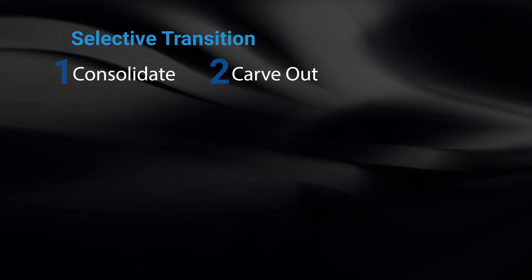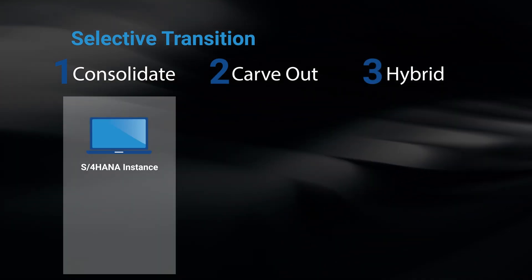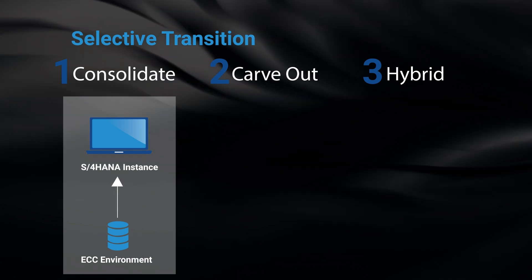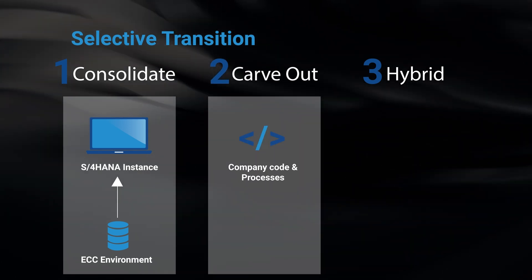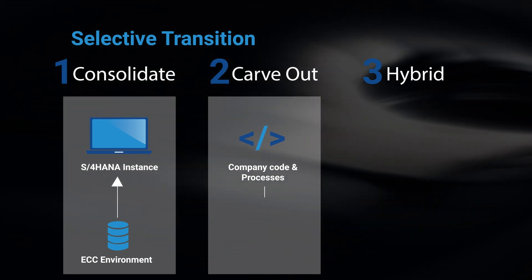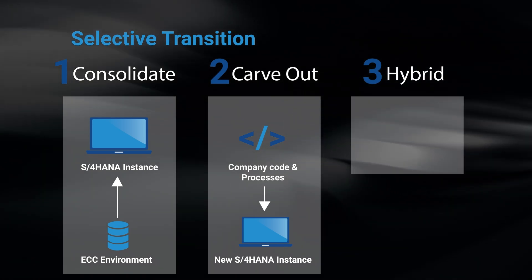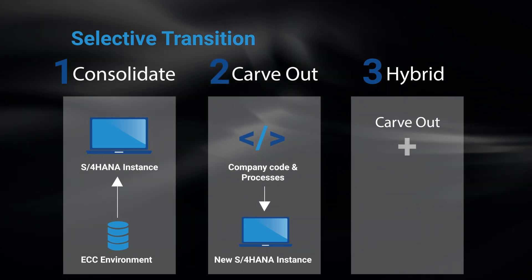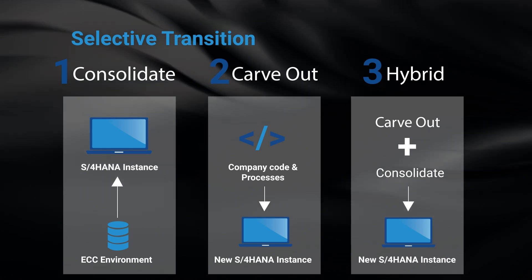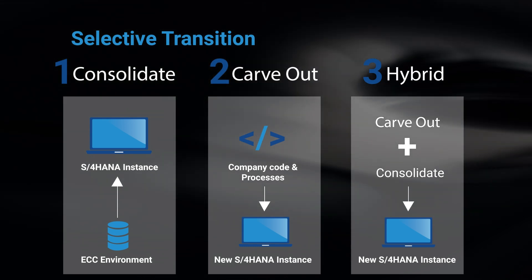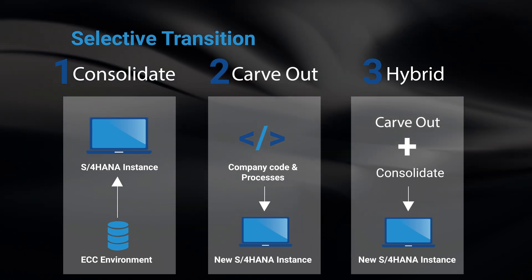Selective transition has three different approaches: consolidate, carve out, and hybrid. Consolidate is where you have a target S4 HANA instance already and you want to add functionality to it from another ECC or S4 environment. Carve out is where you want to extract and migrate certain portions of an existing landscape — such as a company code or a certain set of processes — and stand up a new S4 HANA instance. These two capabilities provide a third option, hybrid, which combines elements of both carve out and consolidate, resulting in a new S4 HANA landscape that integrates selectively migrated processes from one or more legacy solutions and any new processes within S4 HANA. This is like getting the best of your old world and the best of your new world with S4 HANA features.